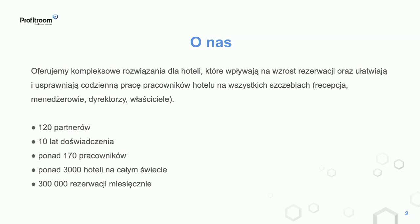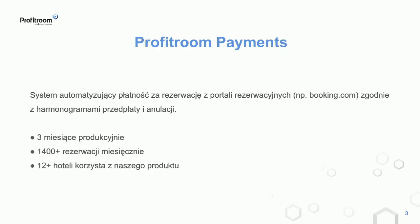Obsługujemy 300 tysięcy rezerwacji miesięcznie. Teraz powiem pokrótce o produkcie, w którym zaimplementowaliśmy wzorce wspomniane w tytule prezentacji – jest to Profit Room Payments. To system automatyzujący płatność za rezerwacje z portali rezerwacyjnych, na przykład Booking.com, zgodnie z harmonogramem przedpłaty i anulacji. Aktualnie działamy 3 miesiące produkcyjnie, obsługujemy 1400 rezerwacji miesięcznie. Korzysta z nas już 14 hoteli.